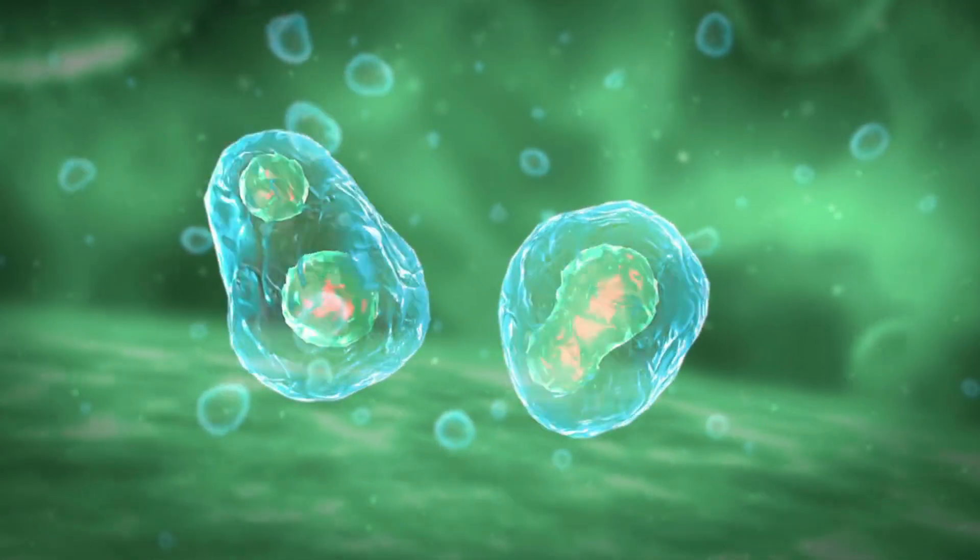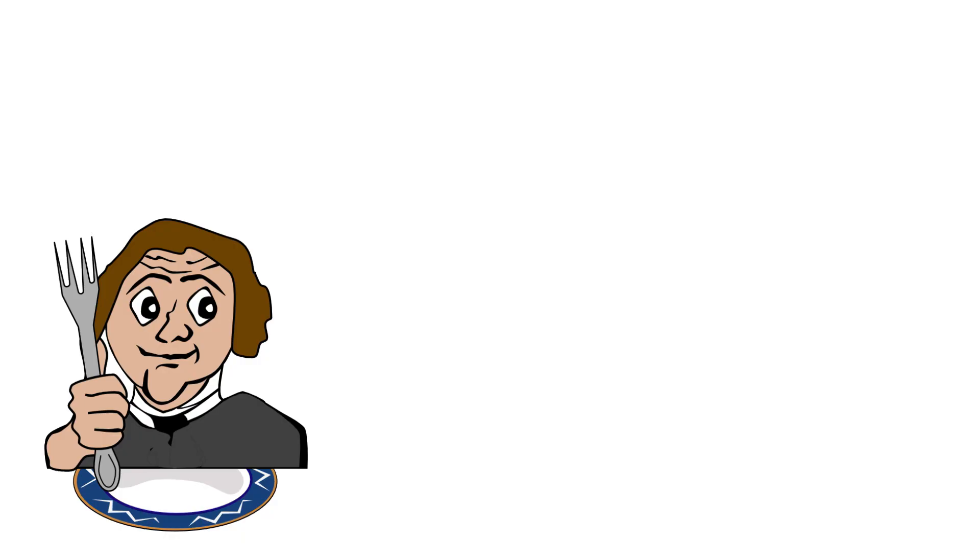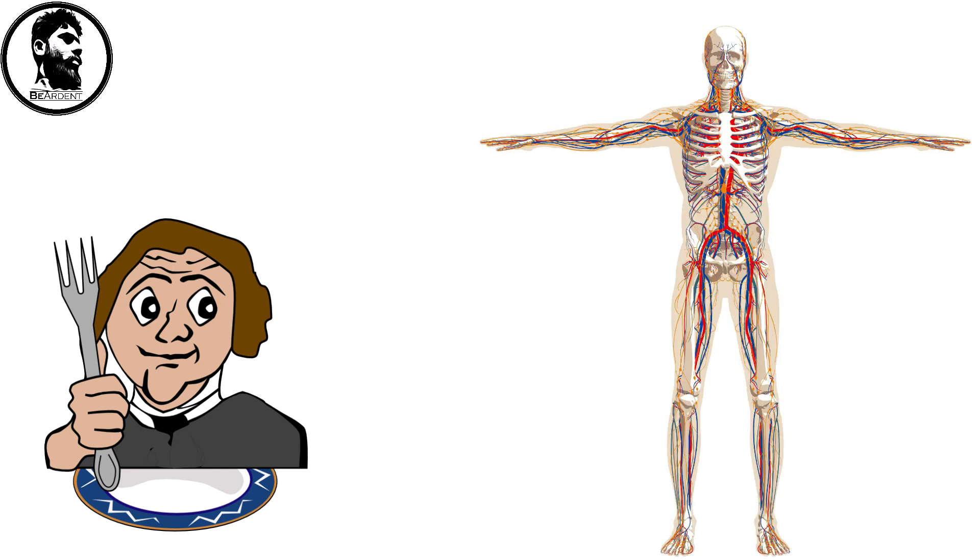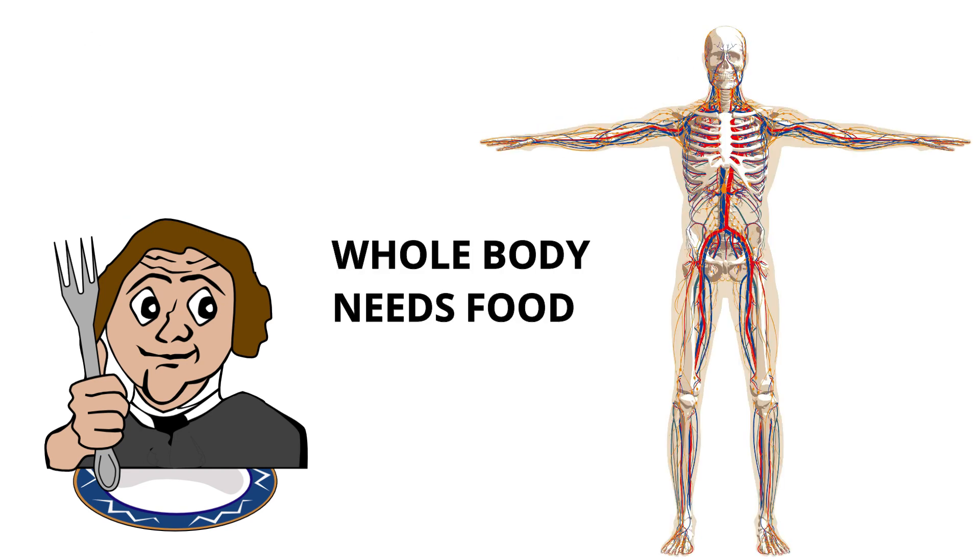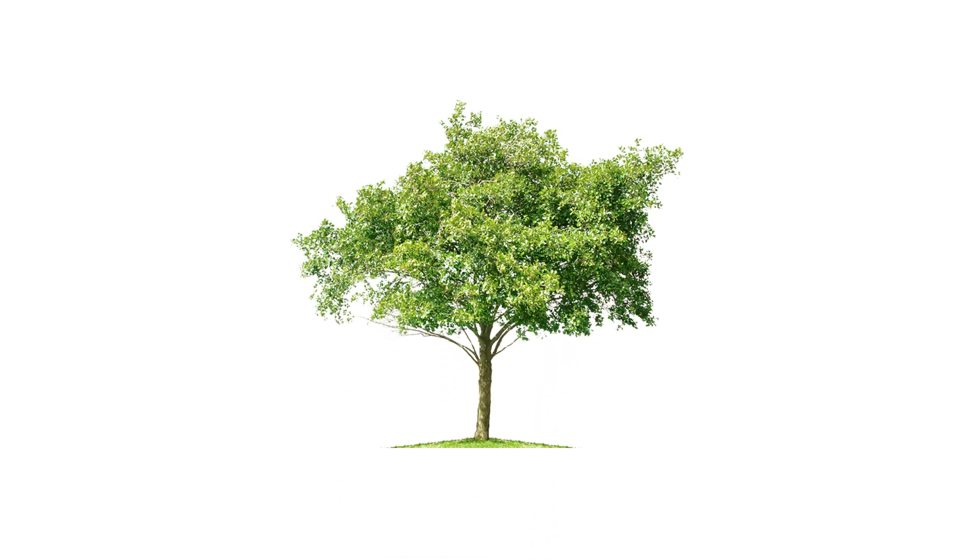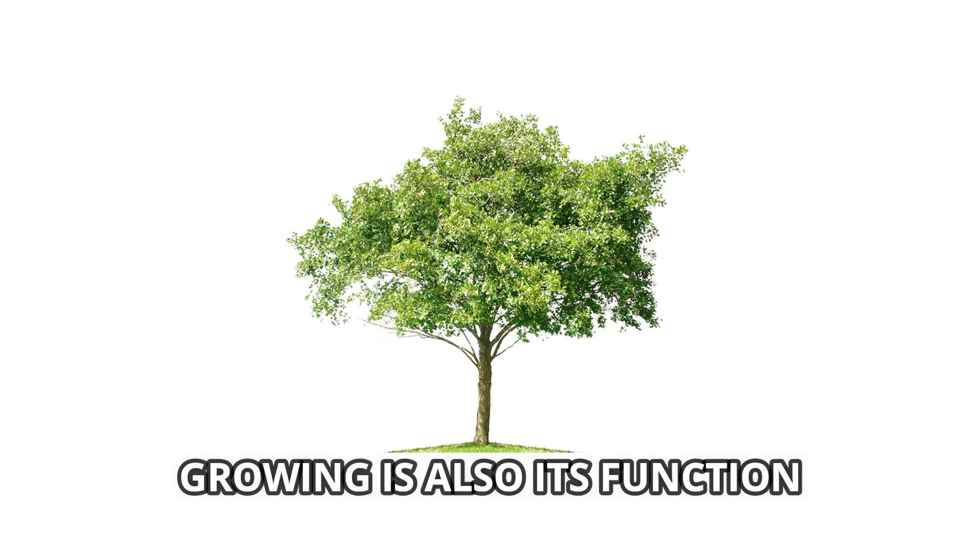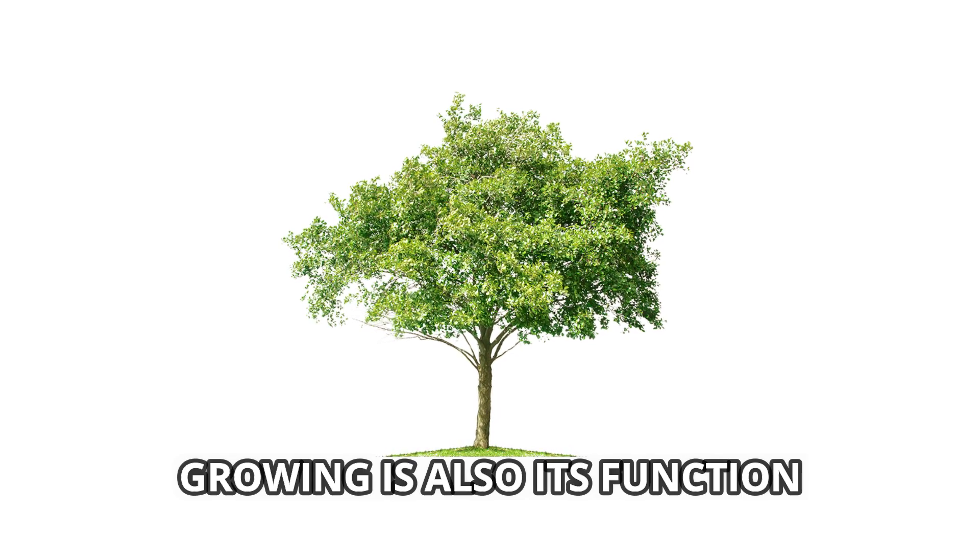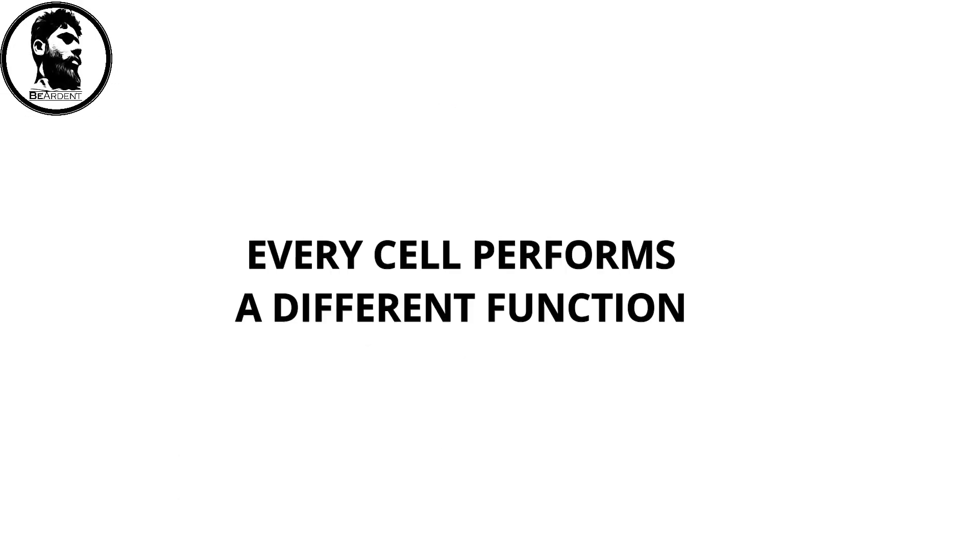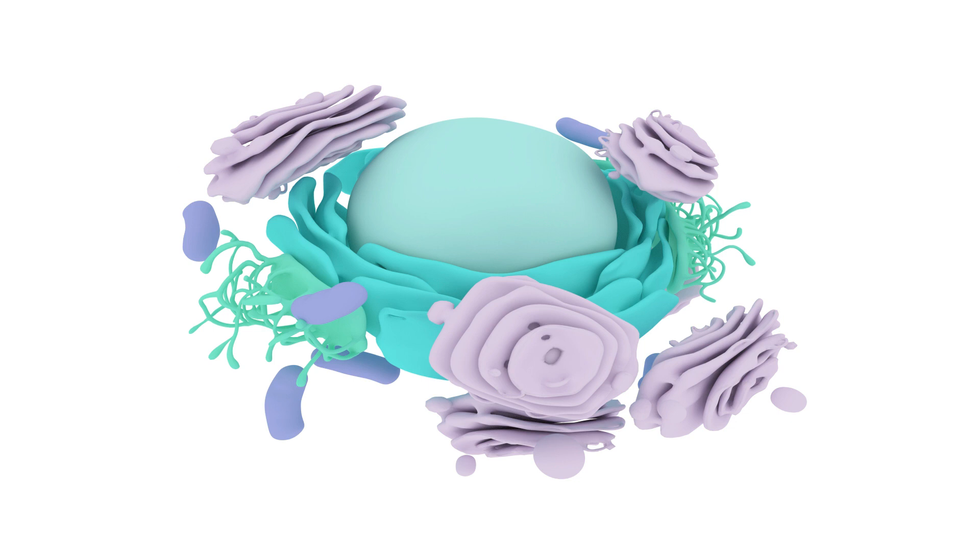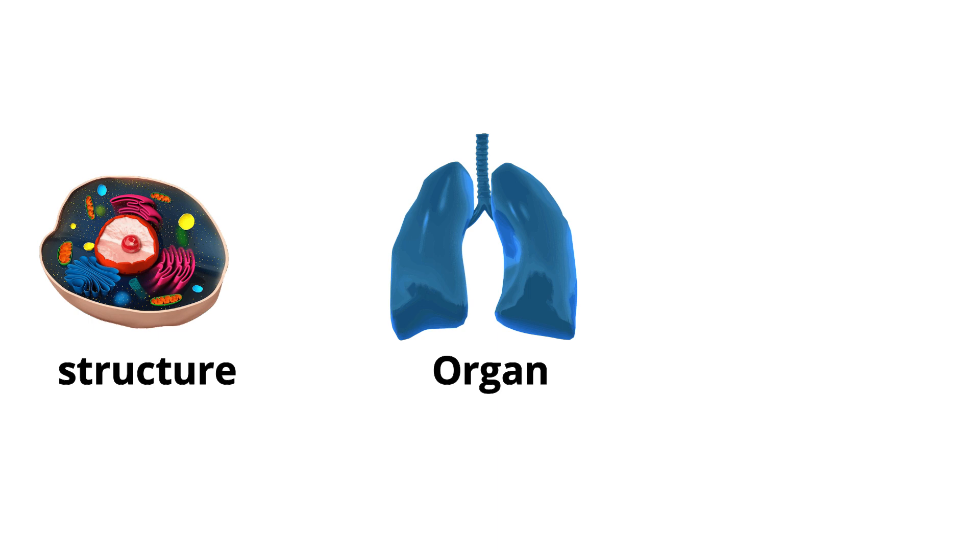When you grow that means your cells are growing. When you feel hungry that doesn't mean your stomach needs food but your whole body needs food, even your hair and nails. When a plant grows by taking water and produces fruit and flower is also a function. So every cell perform a different function. Cells are said to be a structural unit of life because they provide a particular structure to a particular organ and ultimately an organism.